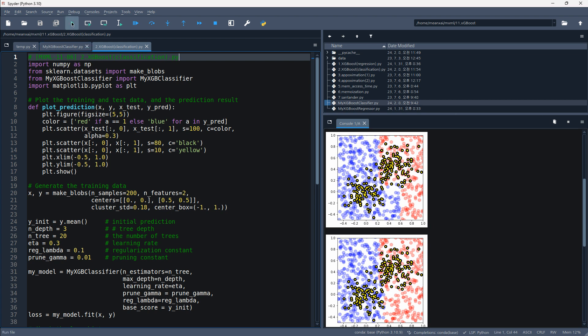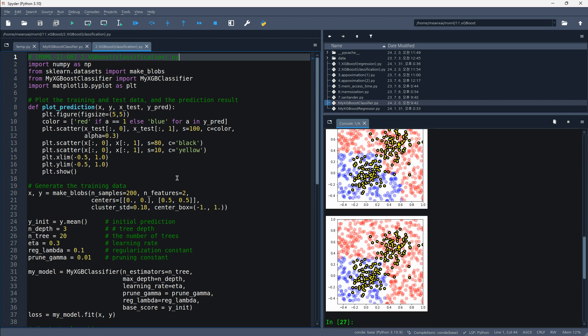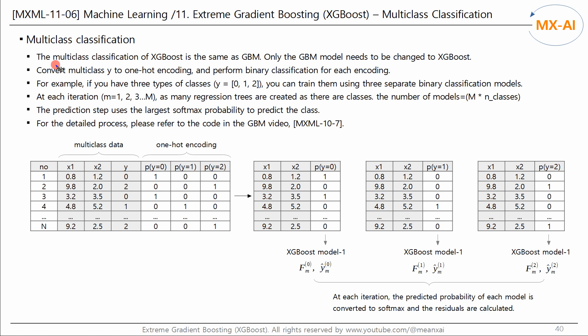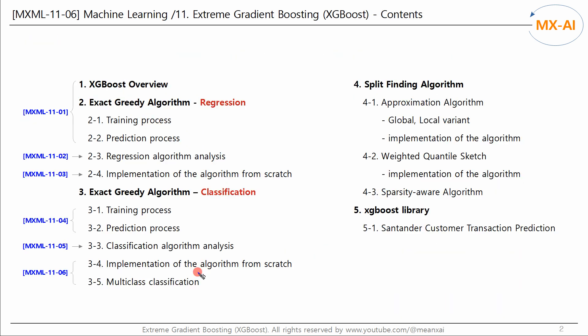Running it one more time, the results came out similarly. The multi-class classification of XGBoost is the same as GBM — please refer to the GBM video for this part. So far, we have implemented the XGBoost classification algorithm from scratch. In the next video, we will look at the approximation algorithm and implement it in code. Thank you.